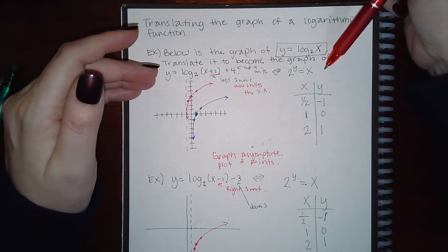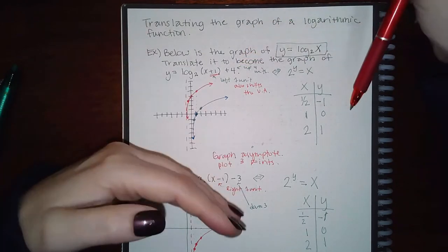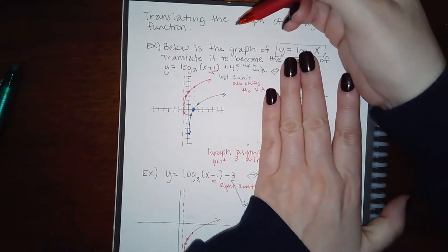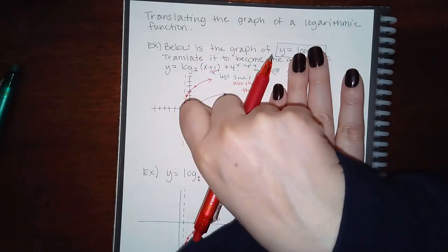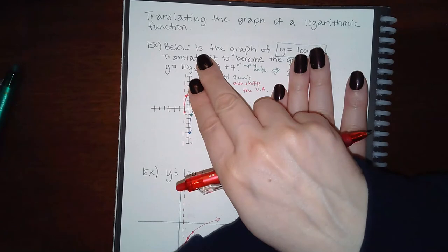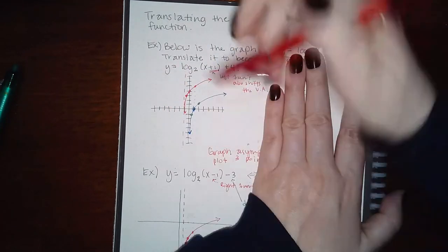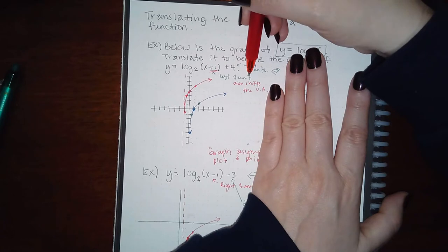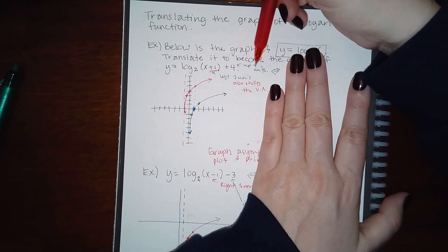However, if this wasn't just a translation problem and they wanted you to graph it all on its own, I'm going to go over that method. First, the shortcut way: if you're just asked to translate by grabbing points and moving them around. Notice that the +1 inside the parentheses makes it move to the left one unit, and the 4 outside the parentheses makes it go up four units.